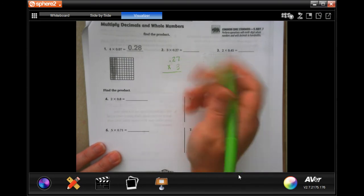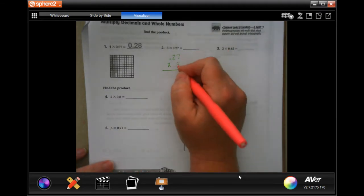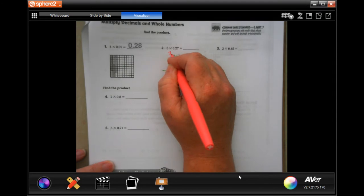Now, even though technically 3 is bigger than 0.27, 27 has more numbers in it, so we're going to put that up top. 3 times 7 is 21, carry our 2. 3 times 2 is 6, plus 2 more is 8. Now, we went in 1, 2 places here, so we're going to go in 1, 2 places here, and our answer is 0.81.